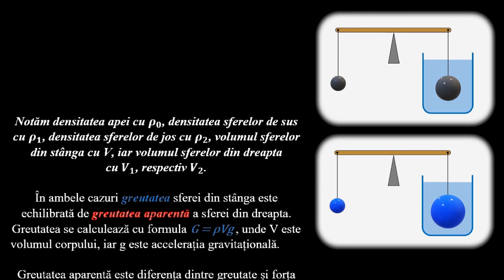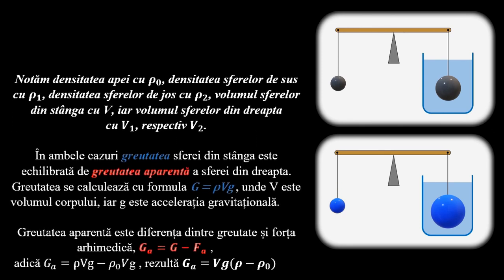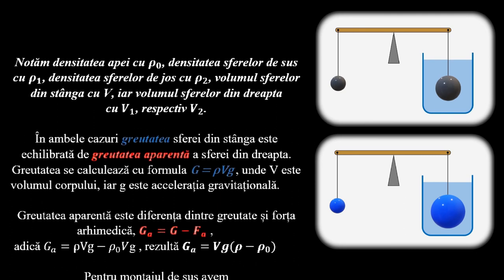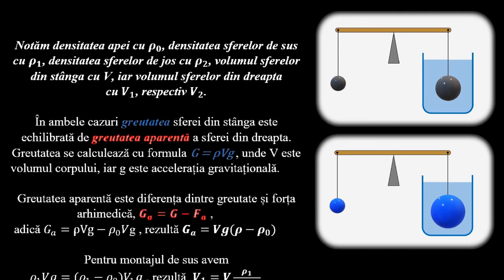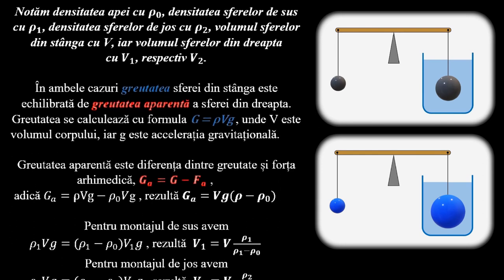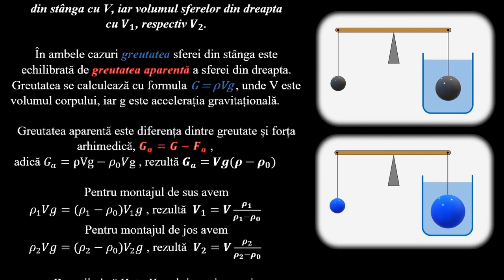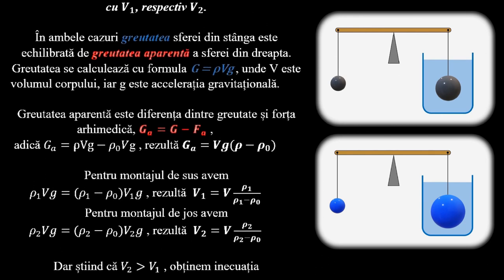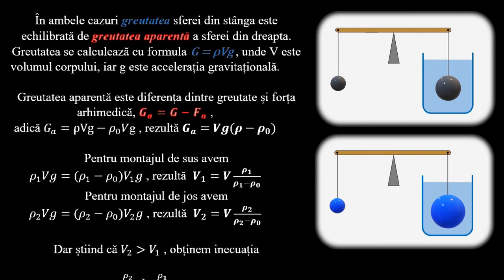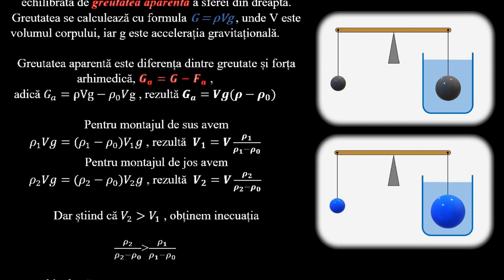În ambele cazuri, greutatea sferei din stânga este echilibrată de greutatea aparentă a sferei din dreapta. Greutatea se calculează cu formula G = ρ·V·g, unde V este volumul corpului, iar g este accelerația gravitațională. Greutatea aparentă este diferența dintre greutatea și forța arhimedică, adică G - F_A.